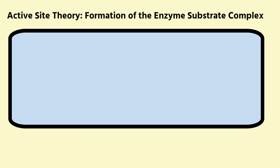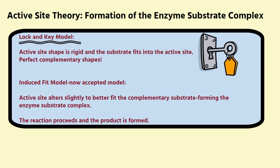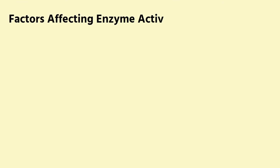Forming the enzyme-substrate complex is key to how an enzyme works; this is known as active site theory, and there are two models. The first is the lock-and-key model, which proposed that the active site is rigid and the substrate fits into it with a complementary shape. However, this has been replaced by the induced fit model — now the accepted model — in which the active site actually alters slightly to better fit the complementary substrate, forming the enzyme-substrate complex. The reaction proceeds and the product is formed, a bit like sitting into a beanbag and how it changes shape to best fit around you. Note that the enzyme is unchanged and available to bind with other substrate molecules after the reaction.